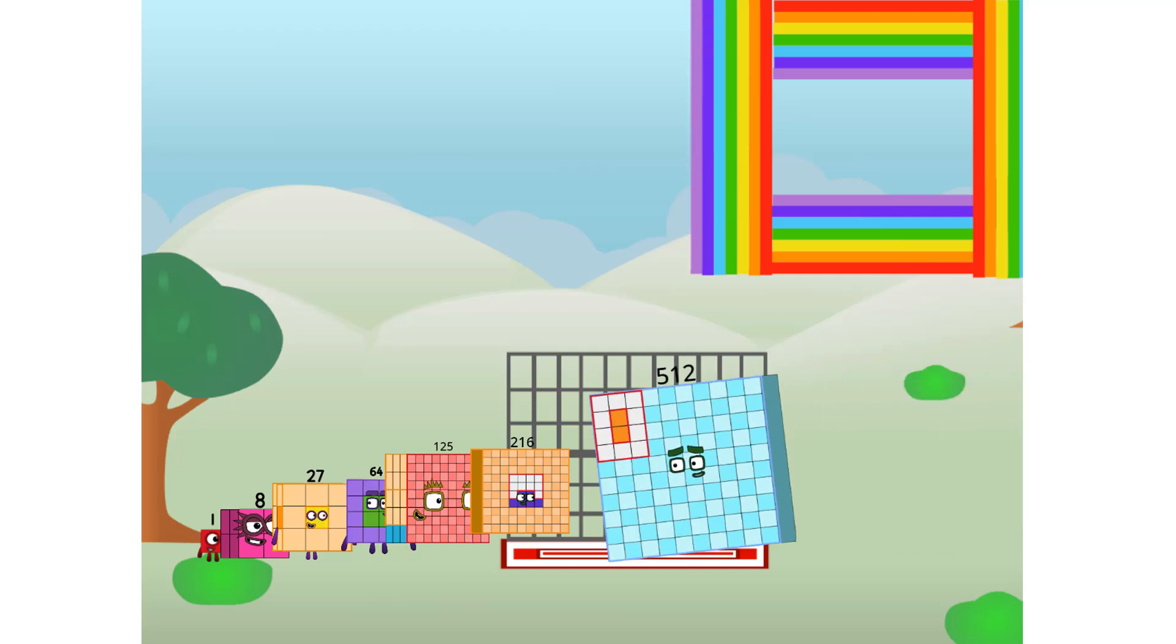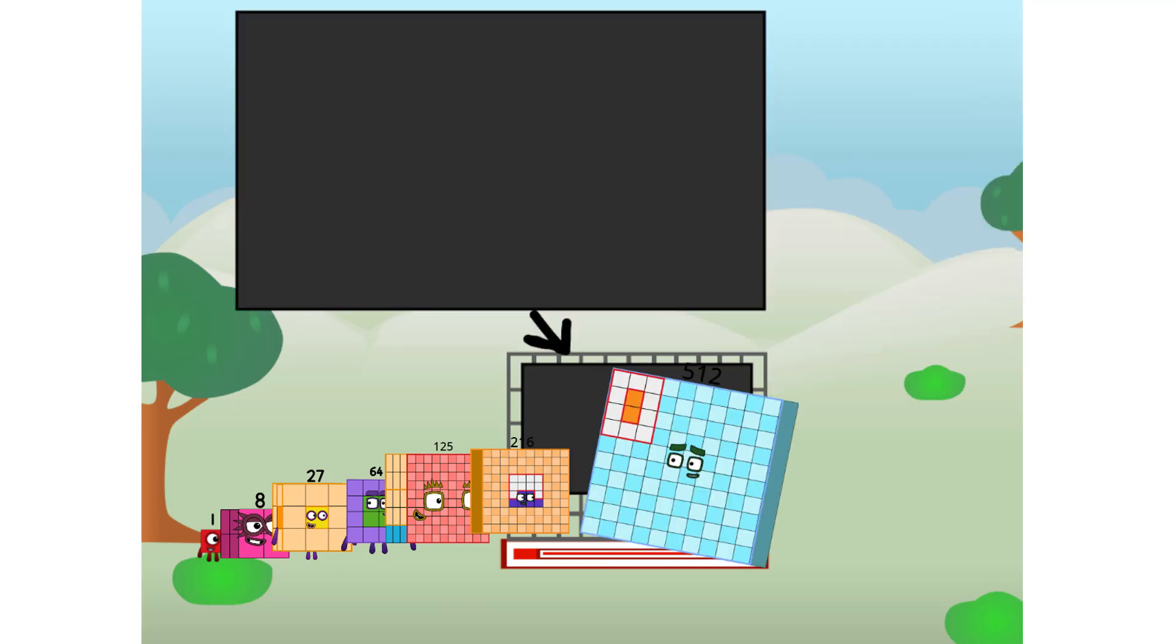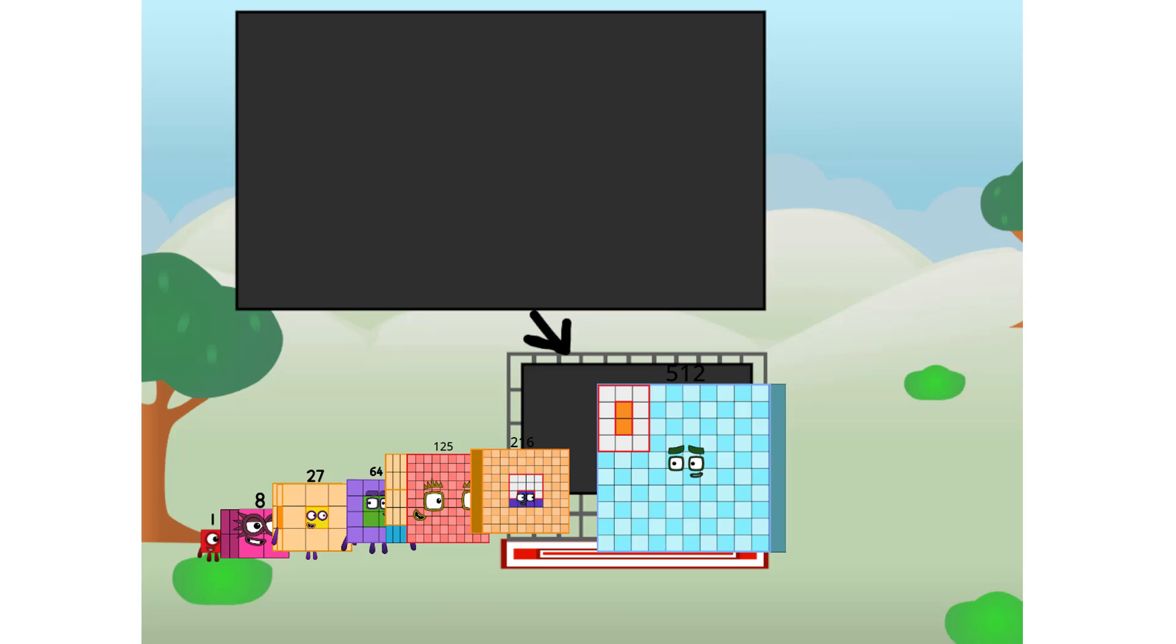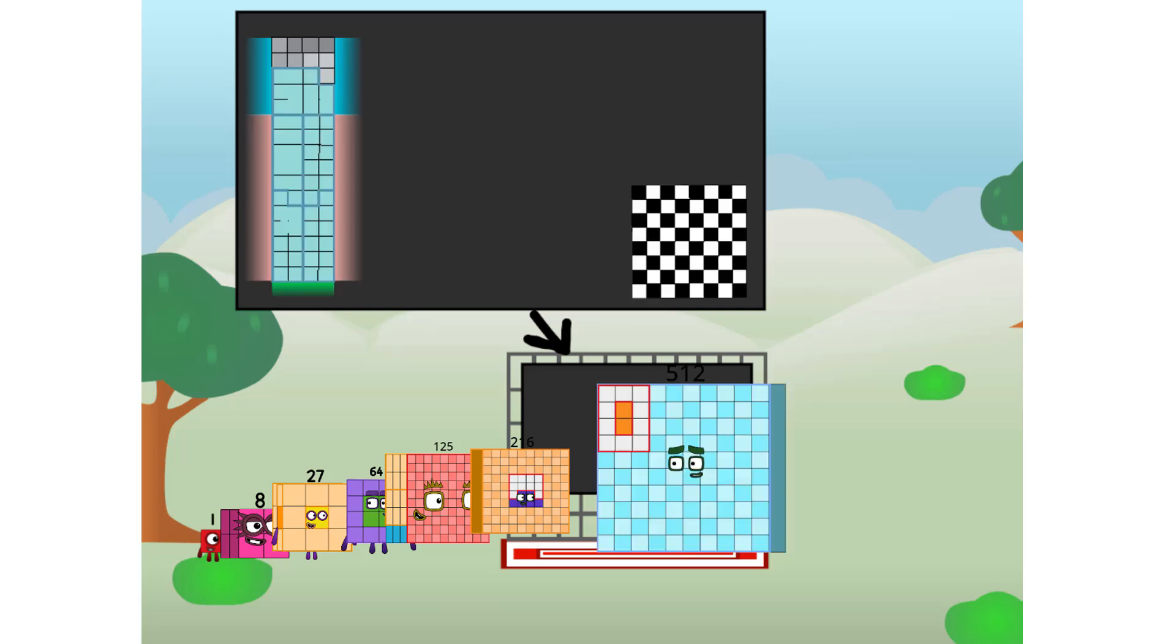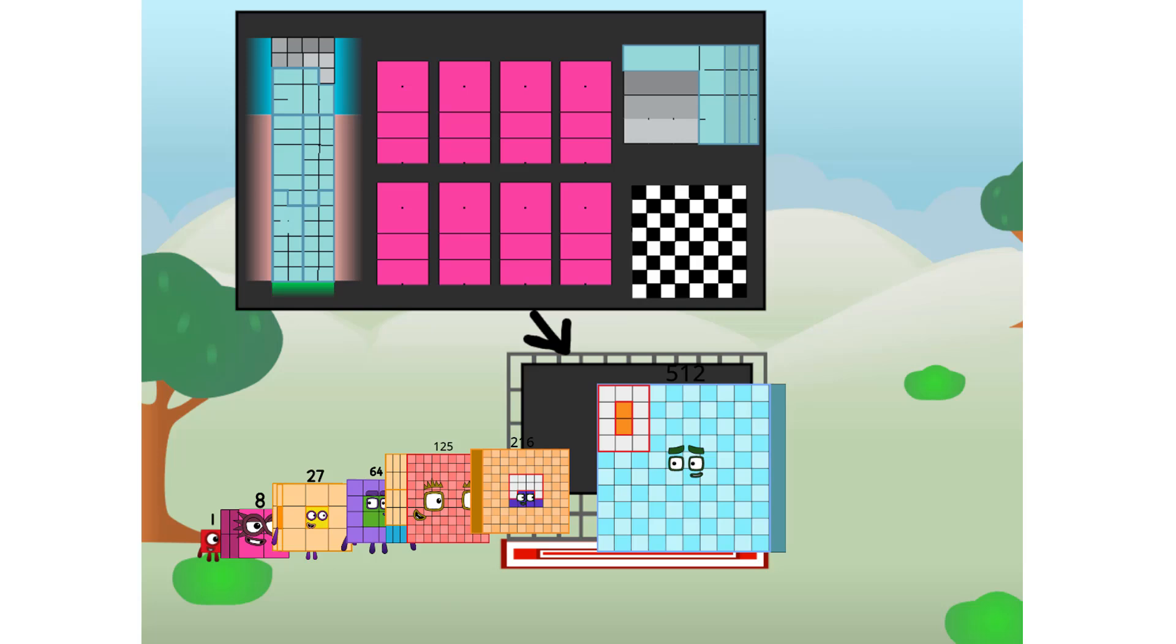There you are. This way. I've got so much to show you. I am 59, and I can be a strong square, a chess board, a super rectangle, 8 octoblocks, or even a super cube.